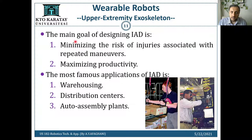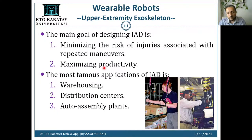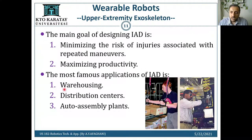The main goals of the IAD are: first, minimizing the risk of injuries associated with repeated maneuvers. As you know, in industry there are many cases where workers get injured, and using this type of robot helps avoid those injuries. The second goal is maximizing productivity, because when work is done faster, productivity is higher.